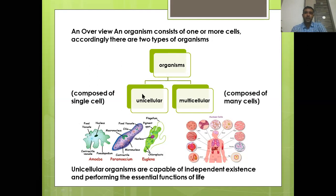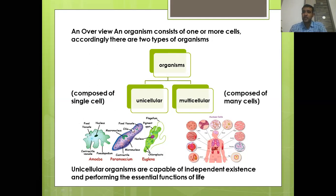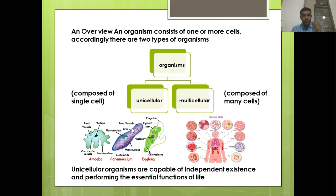The first organism type is unicellular and the second is multicellular. Unicellular means composed of a single cell. Examples include amoeba, paramecium, and euglena. Multicellular means composed of many cells. Many cells combine to form tissue, tissue to organ, organ to organ system, and organ system to the complete living organism.